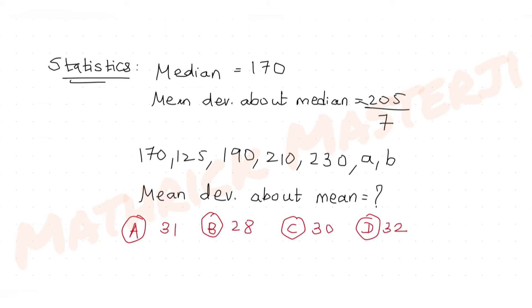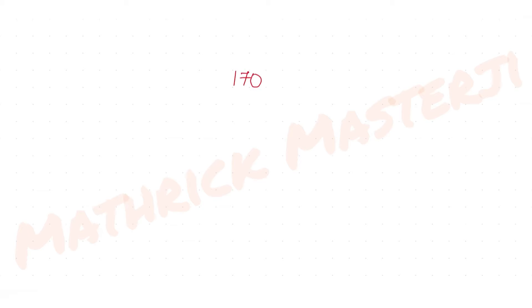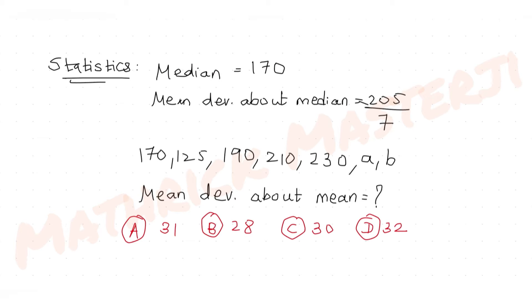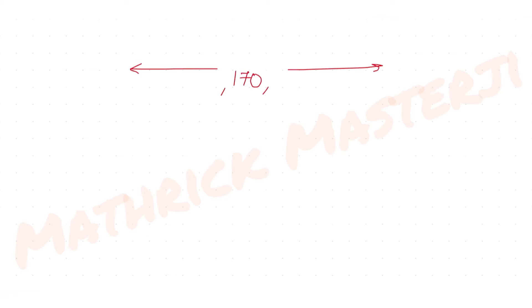Since the median of the seven observations is 170, the middle term when arranged in ascending order should be 170. There should be three terms below and three terms above the median. The three terms above 170 are 190, 210, and 230. The three terms below the median are 125, A, and B — though we don't know the exact order of A and B yet.